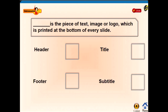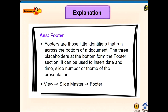There is a question: which is the piece of text, image, or logo that is printed at the bottom of every slide? The options are: header, footer, title, and subtitle. The answer is footer. Footers are those little identifiers that run across the bottom of a document. The three placeholders at the bottom form the footer section. It can be used to insert date and time, slide number, or theme of the presentation.